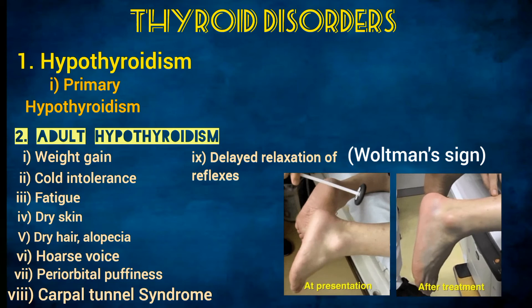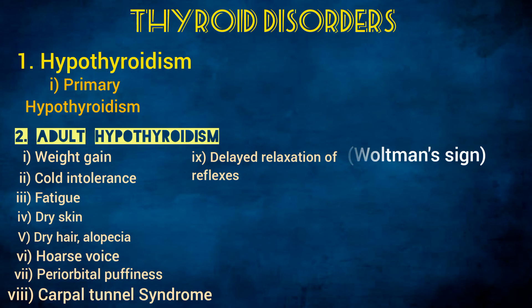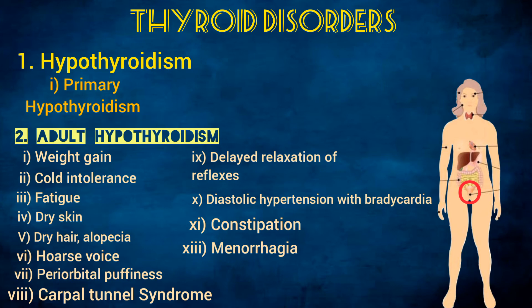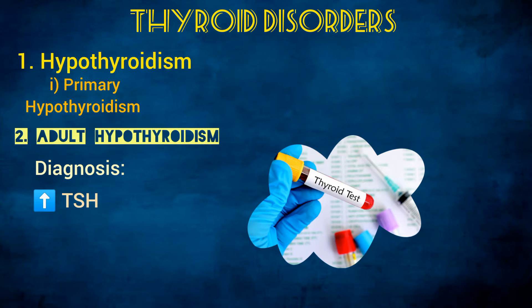This is the same patient after treatment of hypothyroidism, and you can clearly notice the difference in the speed of relaxation. Considering the heart, the patient will have diastolic hypertension with bradycardia. GIT symptoms include constipation, and menorrhagia relates to the reproductive system. TSH is the most useful investigation for both hypo- and hyperthyroidism and helps distinguish between primary and secondary hypothyroidism. Depressed T3 and T4 levels also indicate hypothyroidism.